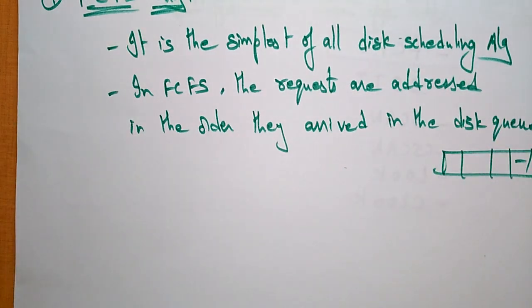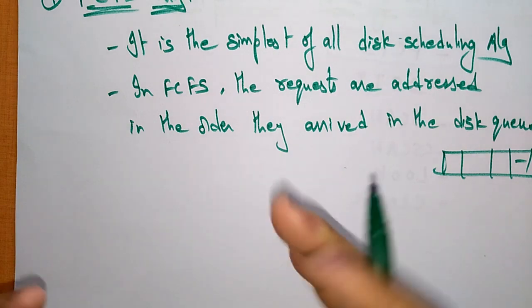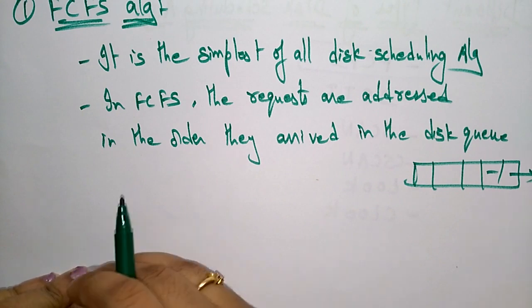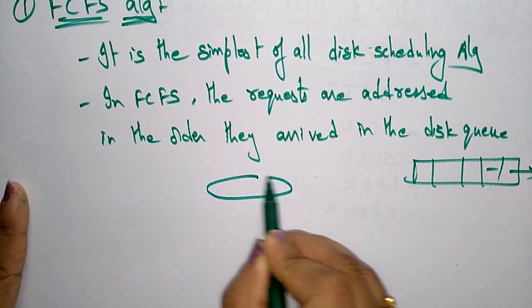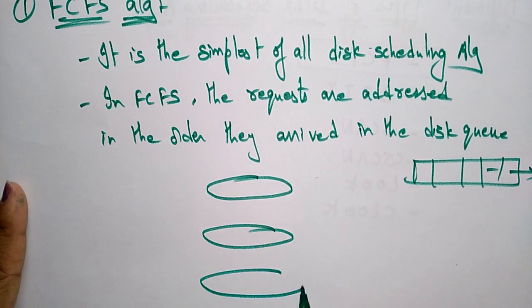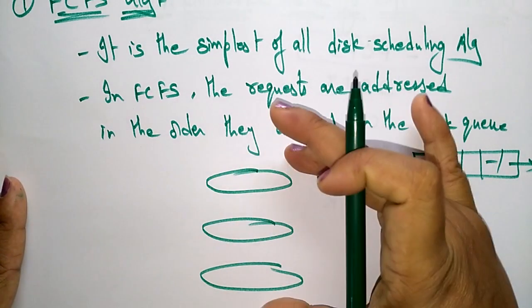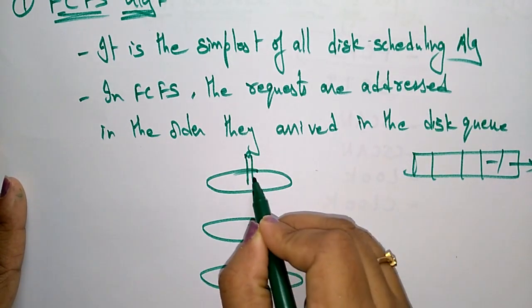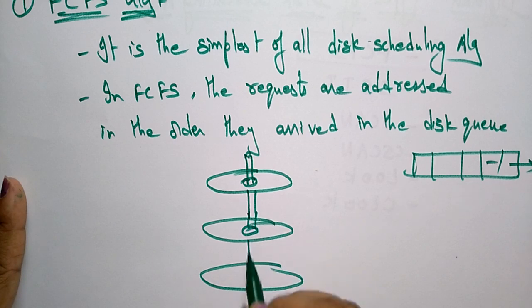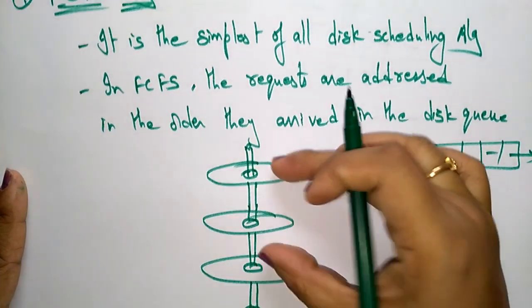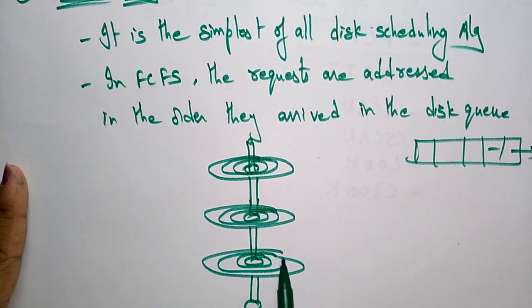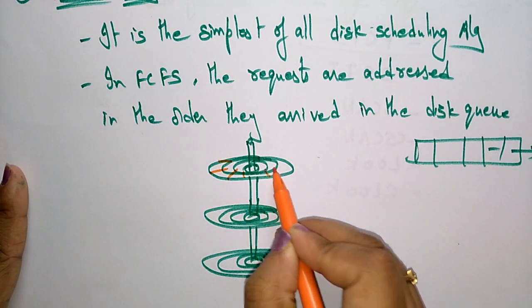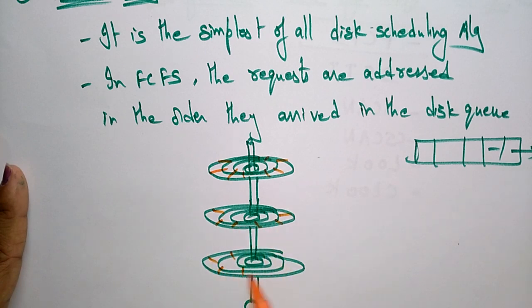The data is stored in sectors. To reach a sector, we first go to the track; to reach the track, we go to the surface; and on the surface, we first reach the platter. The hard disk contains a series of disks — like a bunch of CDs stacked together. The disk consists of a series of tracks, and within the tracks there are sectors where the data is actually stored. This structure is called a platter.